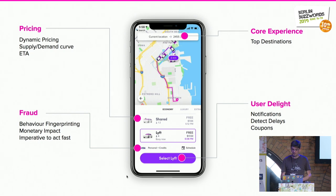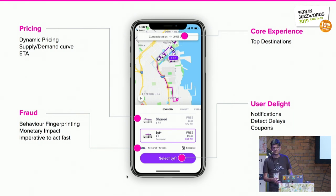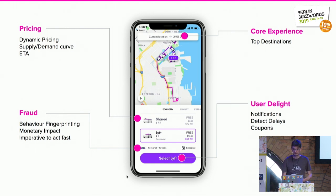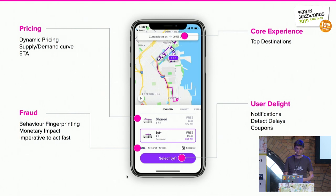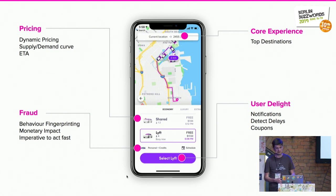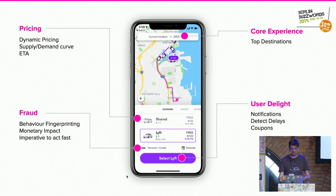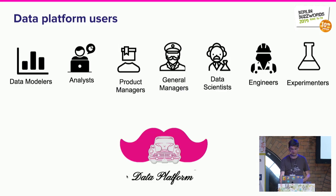We also want to make sure that users are getting notified in a timely manner when there are changes in conditions like traffic delays and route changes. A few examples of important use cases are pricing, fraud detection, and the general area of notifications for users and the overall experience in the application.